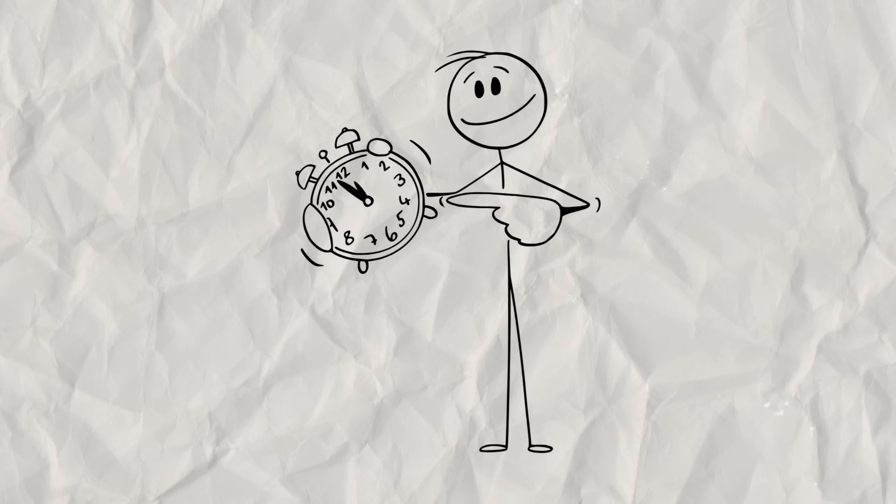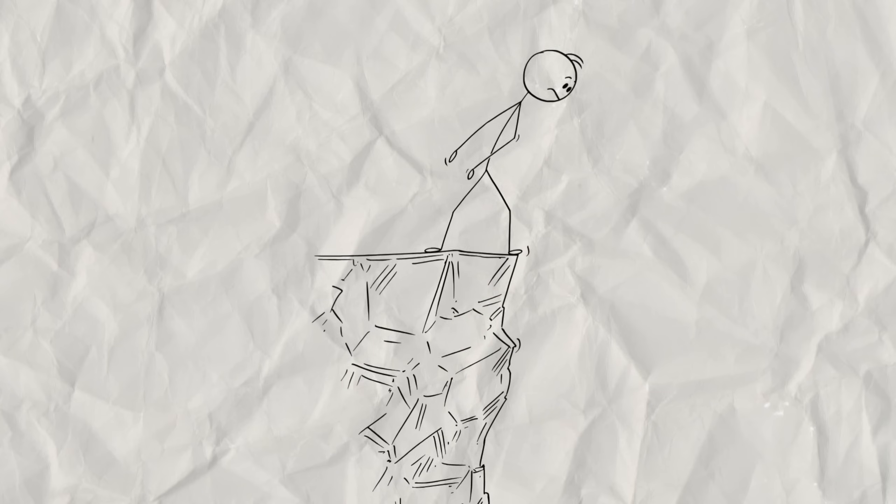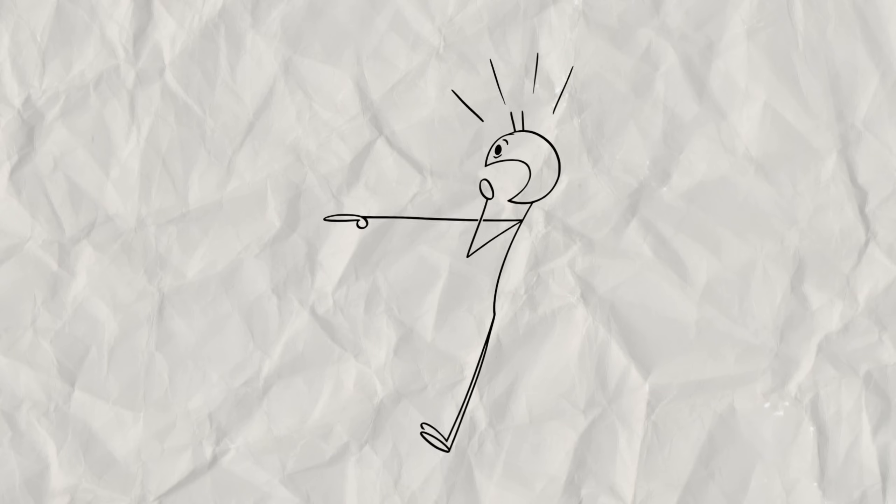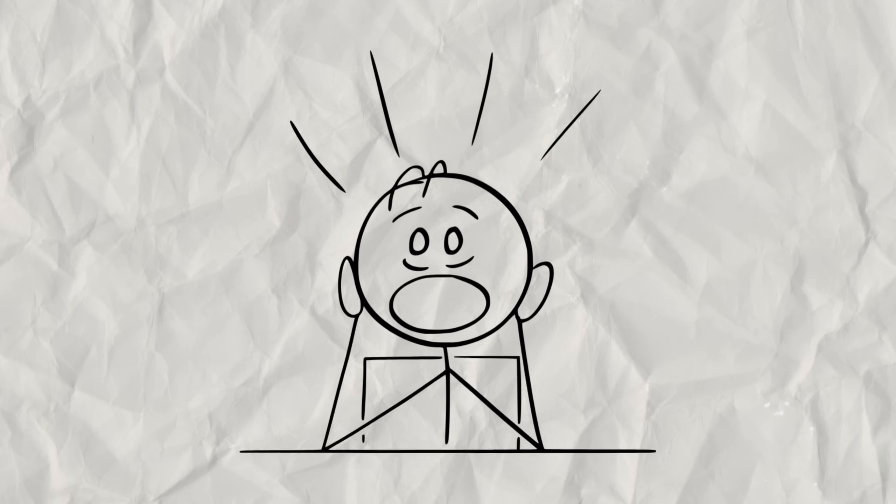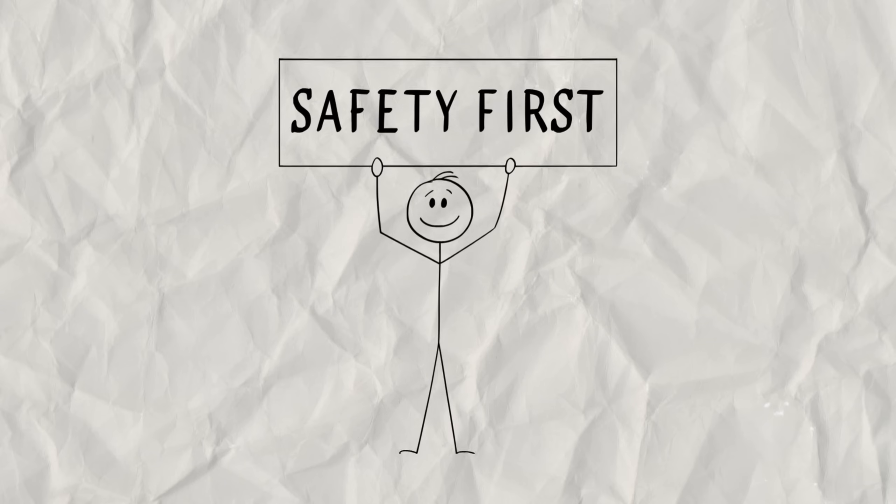For someone who has experienced trauma, this alarm system becomes hypersensitive. It's like a smoke detector that goes off every time someone toasts bread, not just when there's a fire. This means you might find yourself constantly on edge, easily startled, or overreacting to minor stressors. Your body is perpetually bracing for danger, even when none exists.